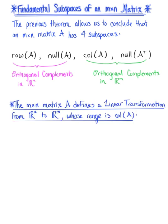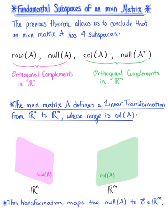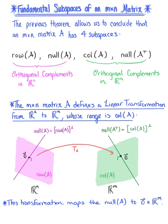This M by N matrix A defines a linear transformation from R^N to R^M, whose range is the column space of matrix A. Moreover, this linear transformation maps the null space of matrix A to the zero vector in R^M. These four subspaces make up what we call the fundamental subspaces of an M by N matrix, and we'll continue to explore them with the following examples.